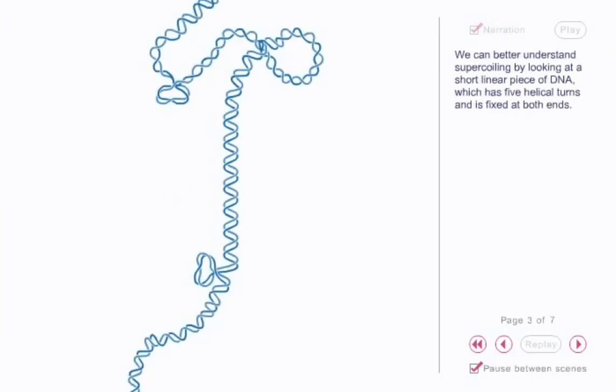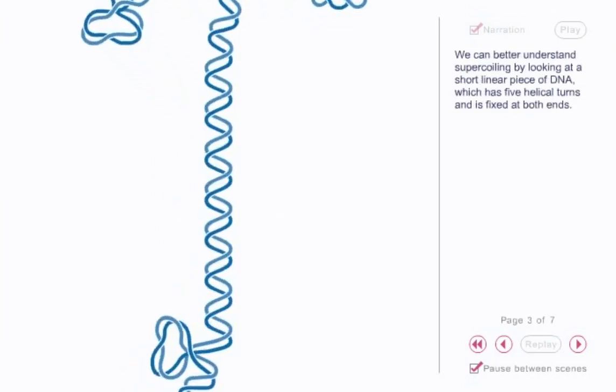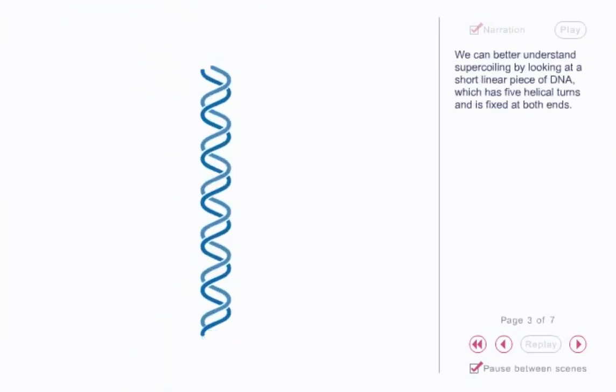We can better understand supercoiling by looking at a short, linear piece of DNA, which has five helical turns and is fixed at both ends.